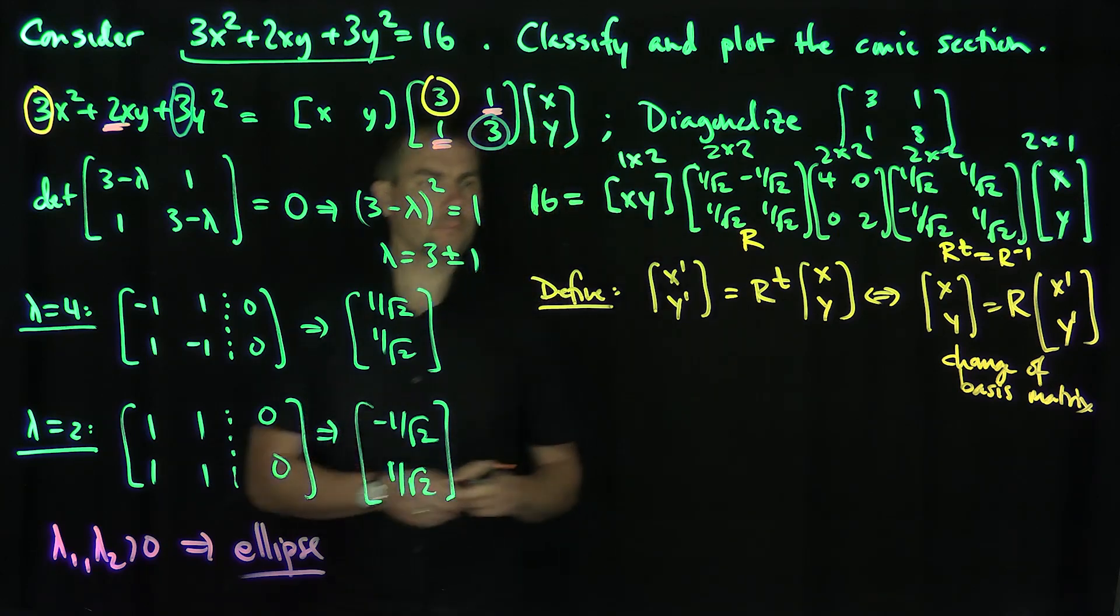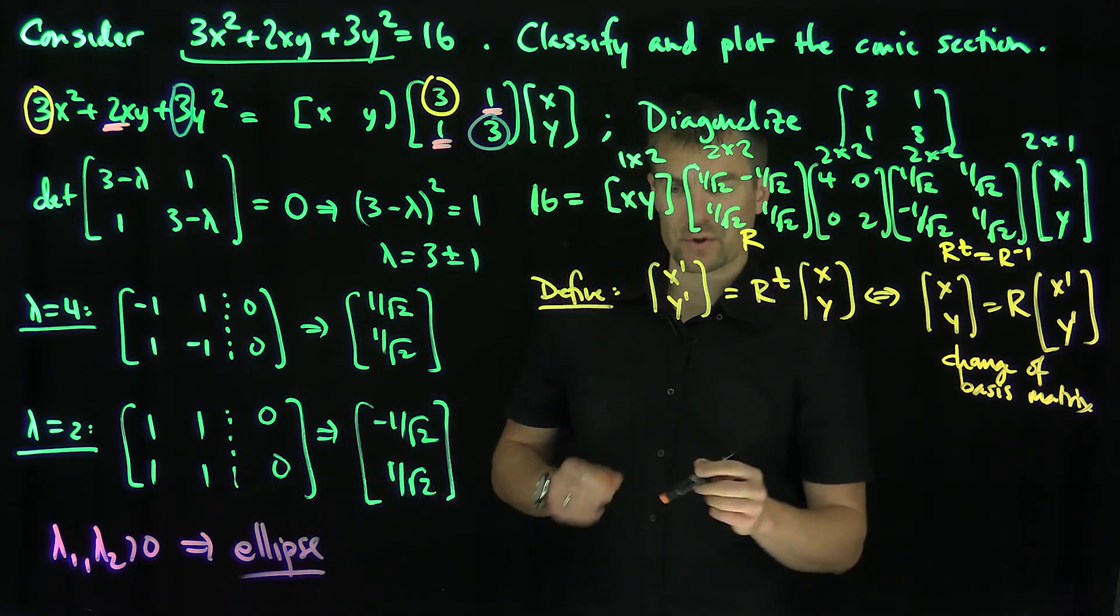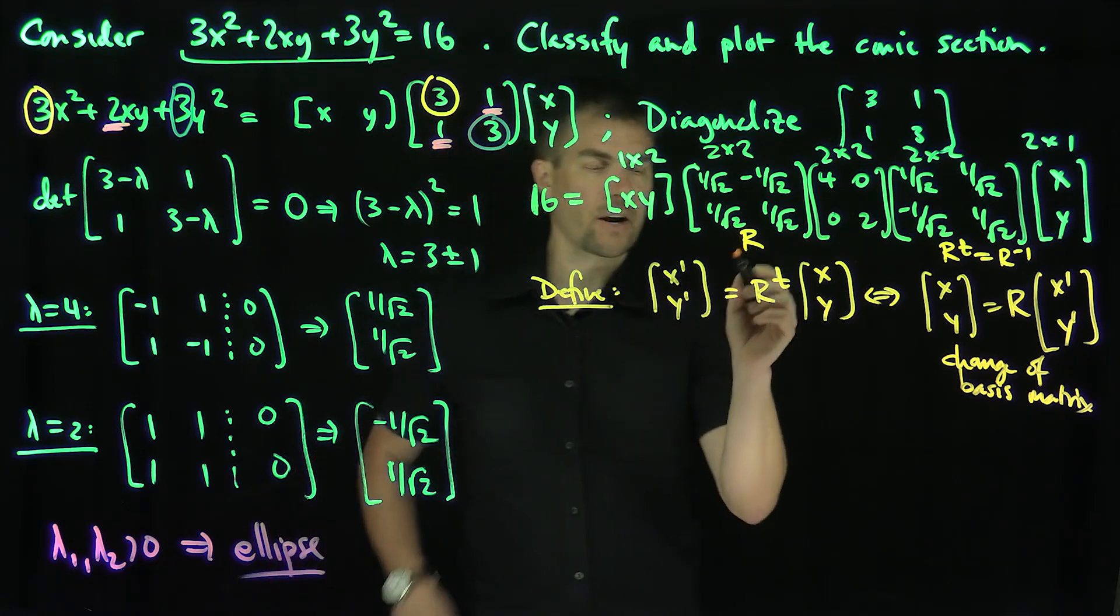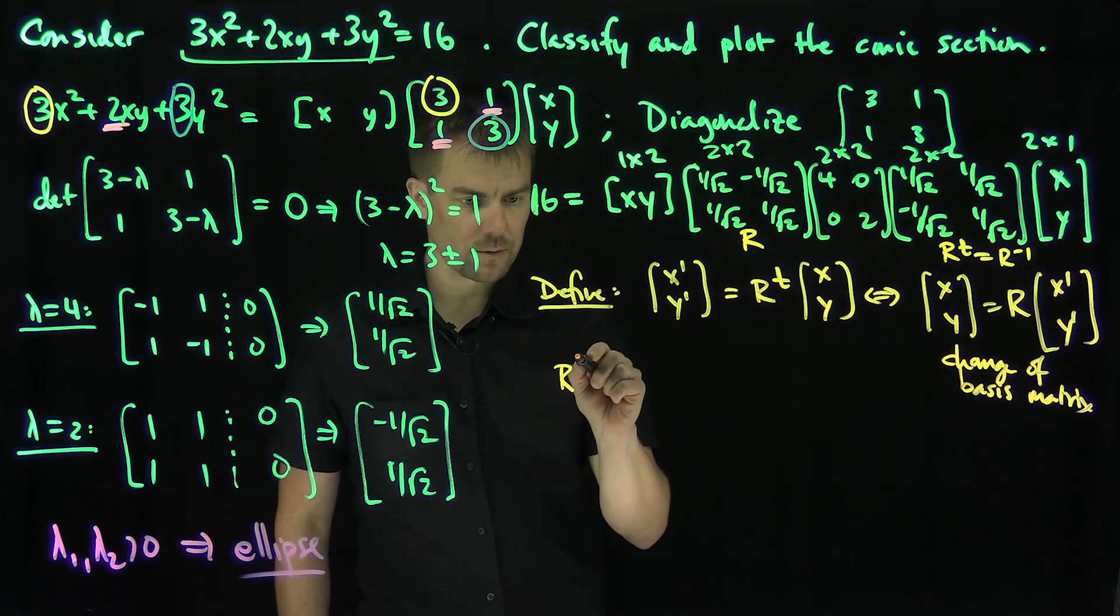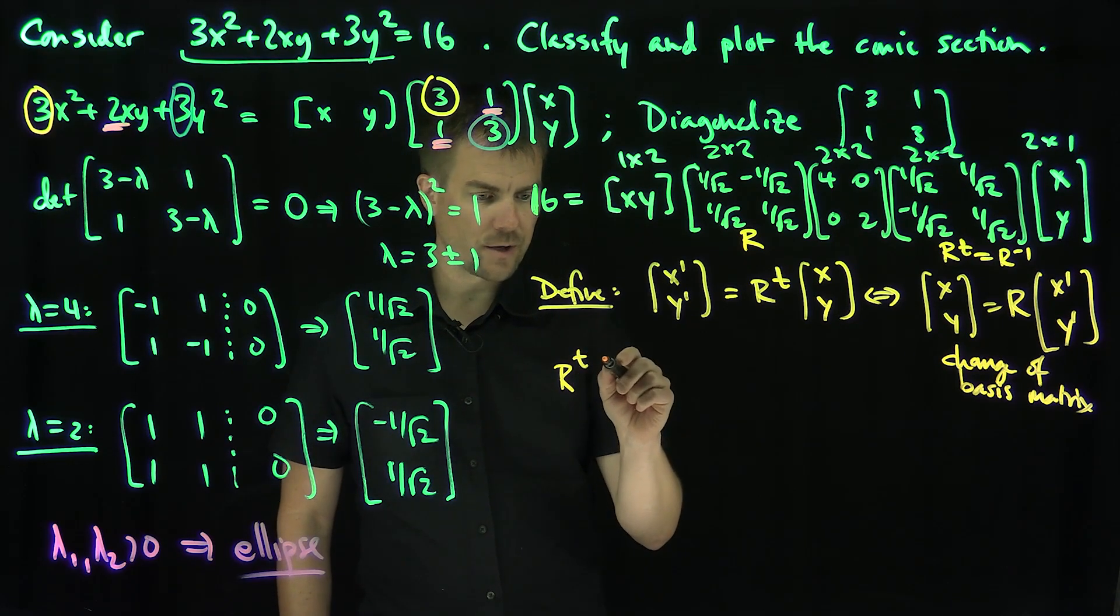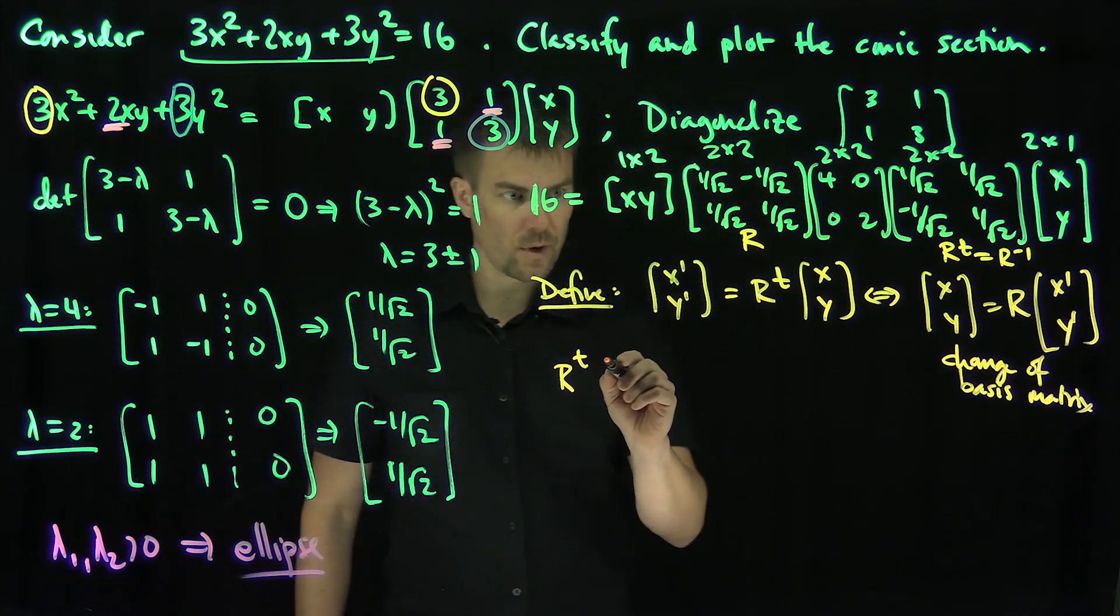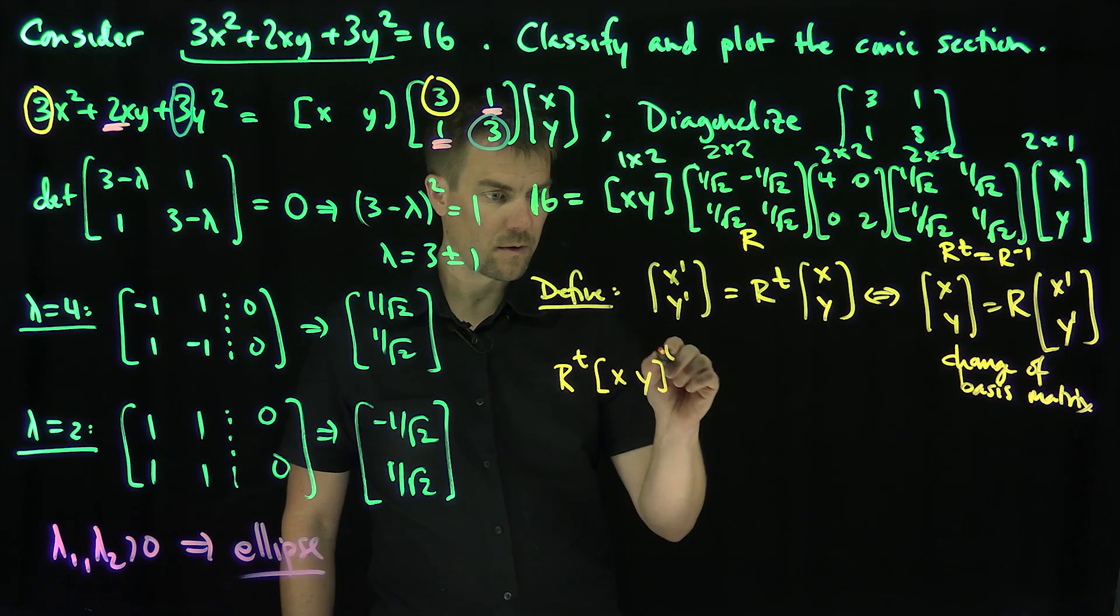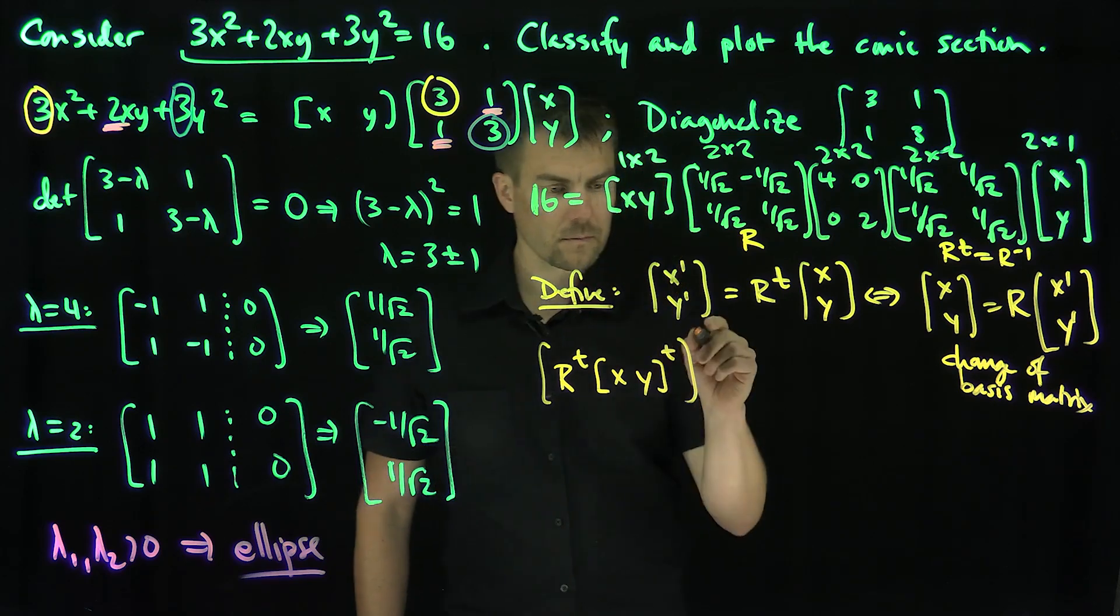And so now what do we have? This is really R transpose, R transpose, and then xy transpose, xy transpose, because R of xy, xy transpose, transpose.